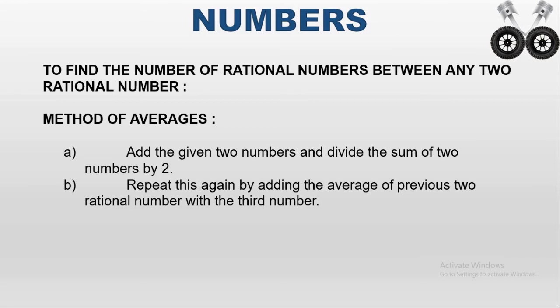You will get another rational number — that is the third rational number. If you want to find the fourth rational number, then you have to add the average of the rational number plus the second rational number, divided by two. Again you will get the fourth rational number. In this way, however many rational numbers you want, you repeat the steps.